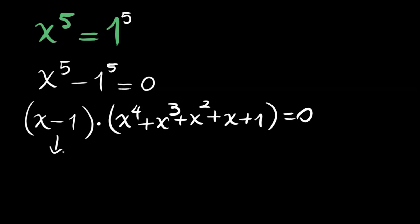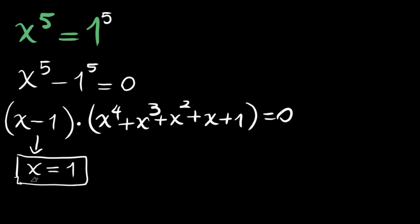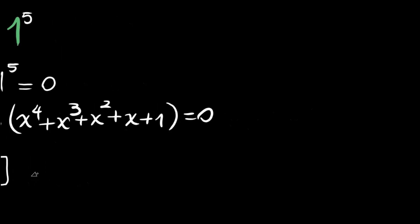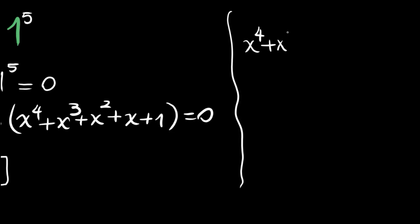The first part is easy: x is equal to 1, so the first root we get is 1. Now let me try to solve the second part. This is a quartic, and it is not easy to solve for all roots. Let me write again: x to the power 4 plus x cubed plus x squared plus x plus 1 is equal to 0.